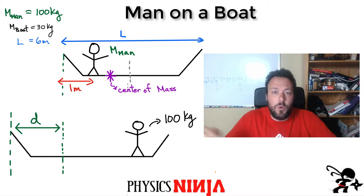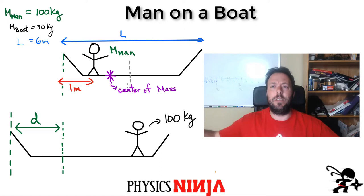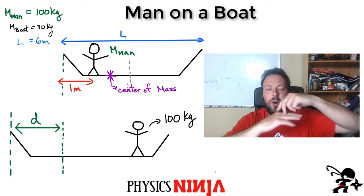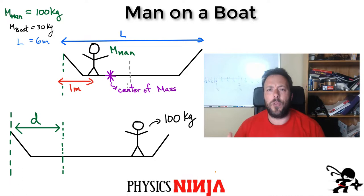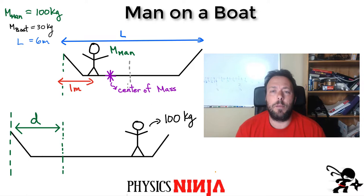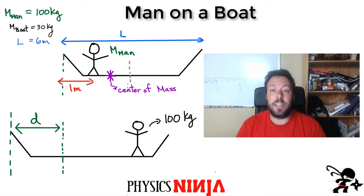I want to find out how far the boat moves as he's walking across. If this were a ship with a mass of hundreds of thousands of kilograms, one person walking across wouldn't move it much. But here the boat is only 30 kilograms and the man has more mass than the boat, so it will move back a considerable amount. This problem typically appears in the momentum chapter and involves the center of mass of a system.